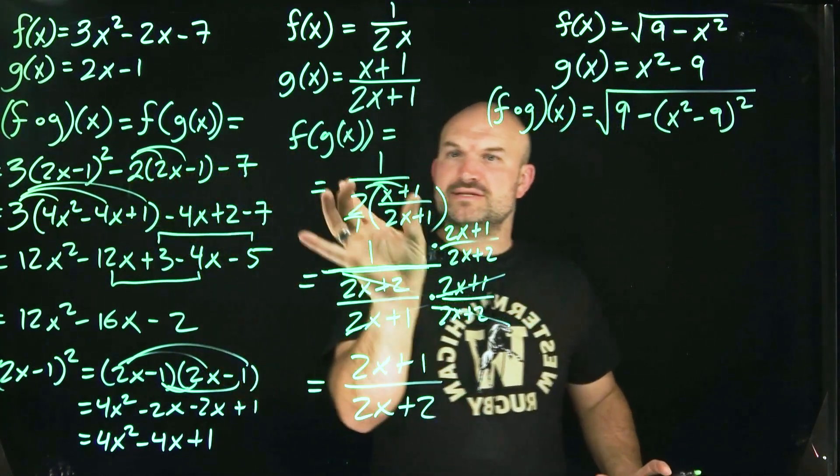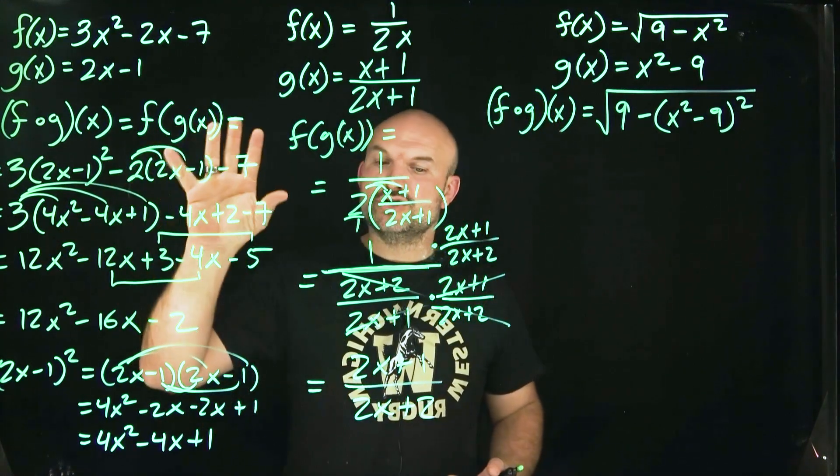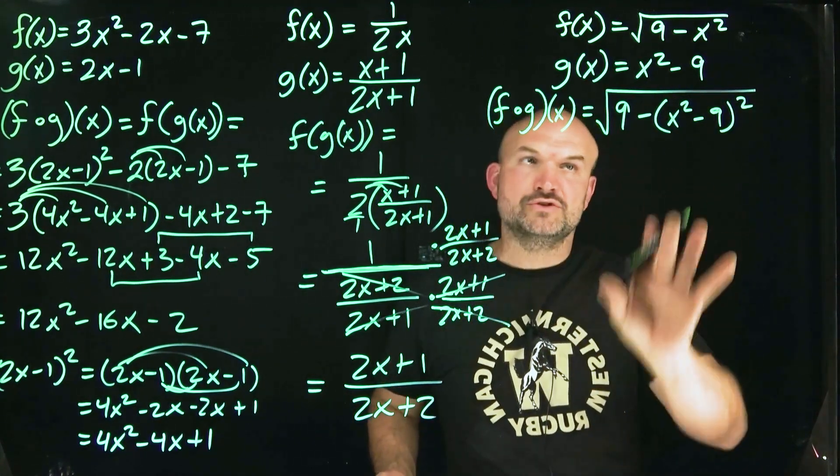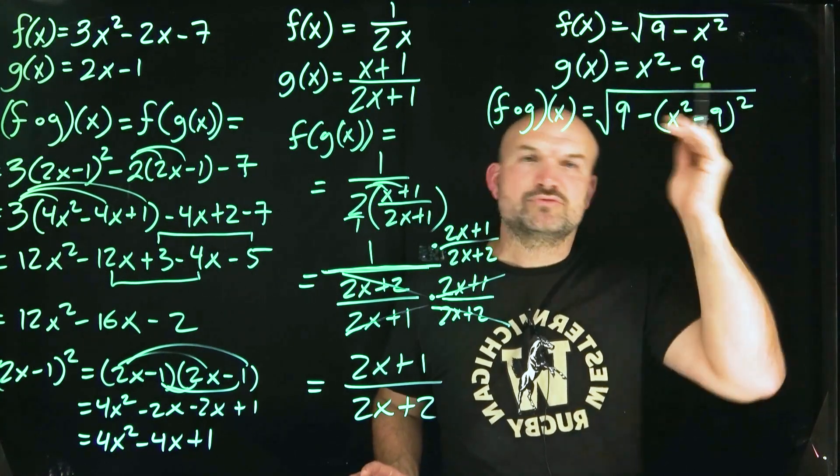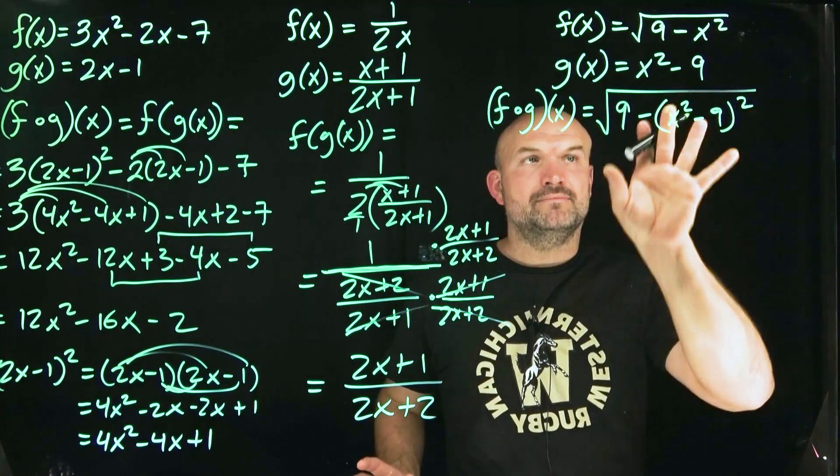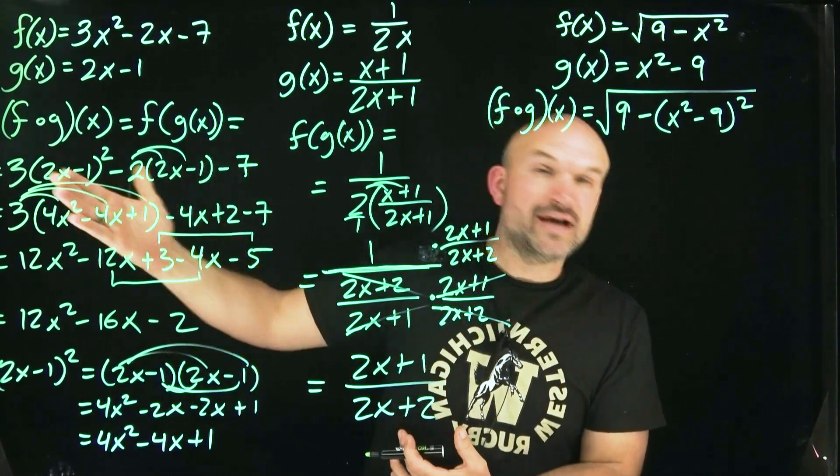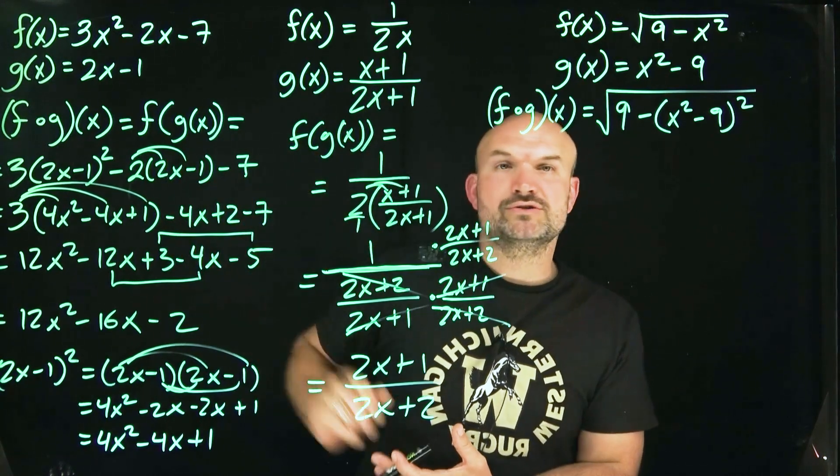One thing I want you to notice is when I did this input, notice how I always use parentheses, right? That's very, very important because that allowed me to preserve my operations to make sure that I was doing the arithmetic correct. That's one thing that a lot of students will make the mistakes on. They don't put parentheses and then they square the 9 and like subtract the x squared or something like that. Don't do that. Make sure you use parentheses when you are replacing the input variable with a number or with another function. It's always important to use those parentheses. Okay.